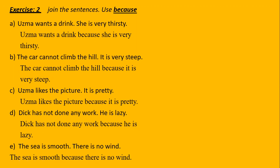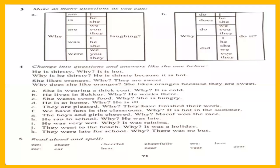Do it in your notebooks. Now move to the next page, page number 71. Exercise Three is just for your practice, as well as Exercise Four — no need to write in your notebooks. Make as many questions as you can orally. Why am I laughing? Why is she laughing? Why are they laughing?